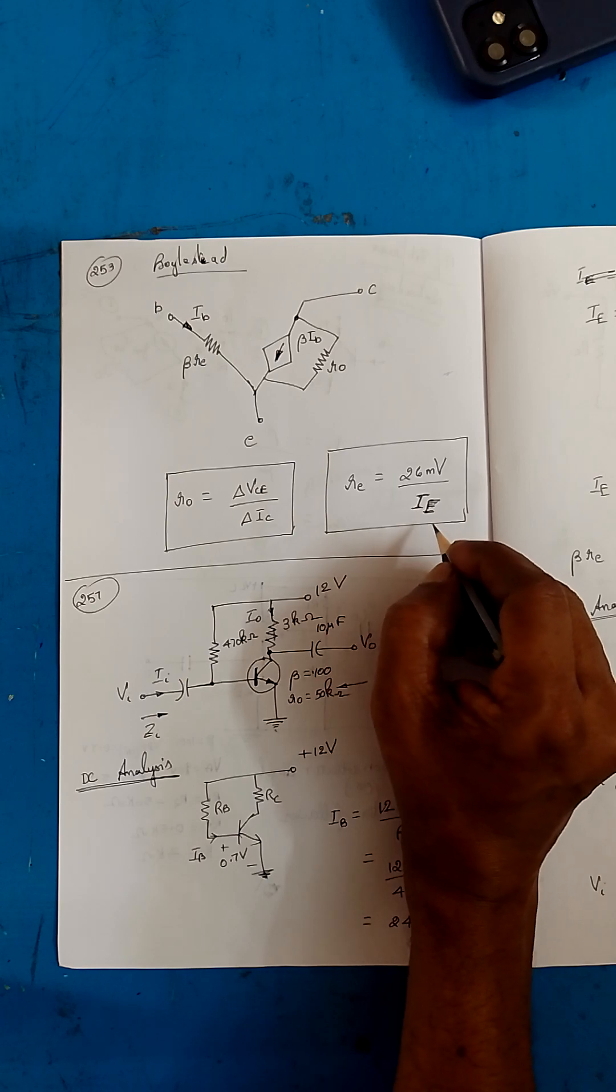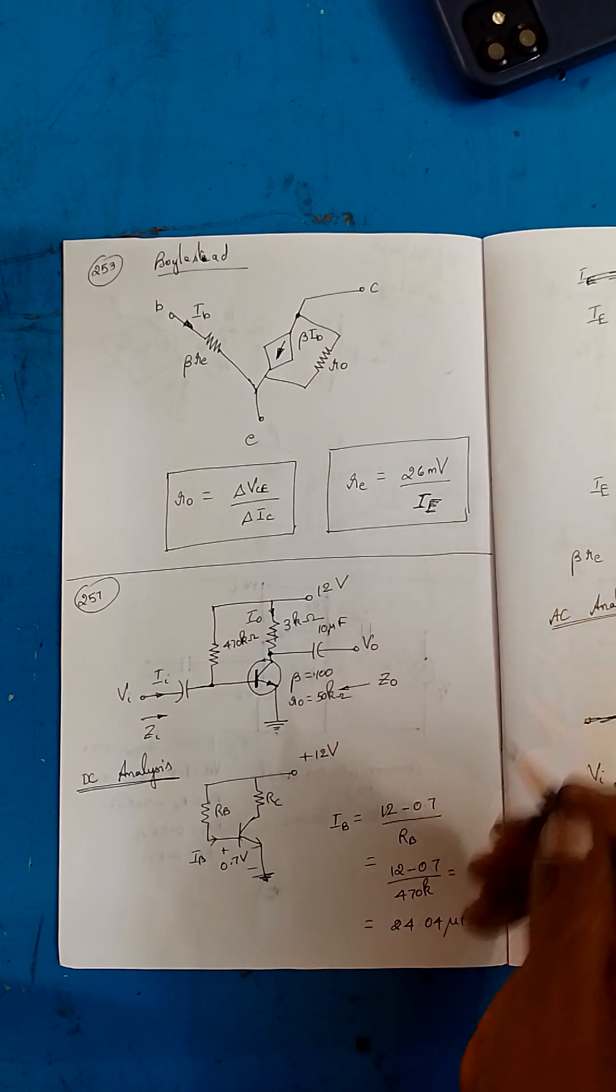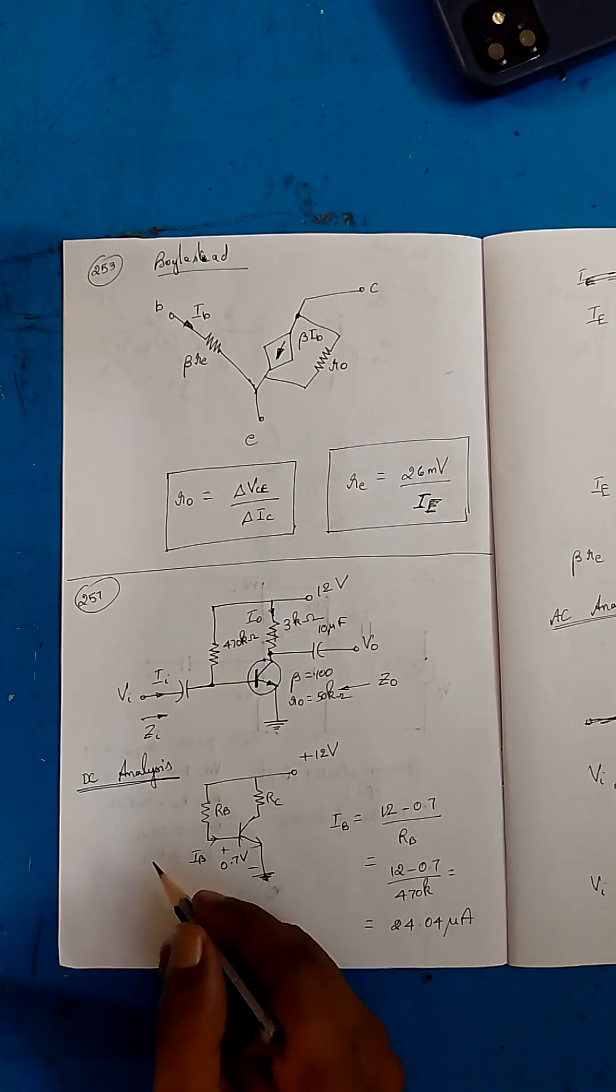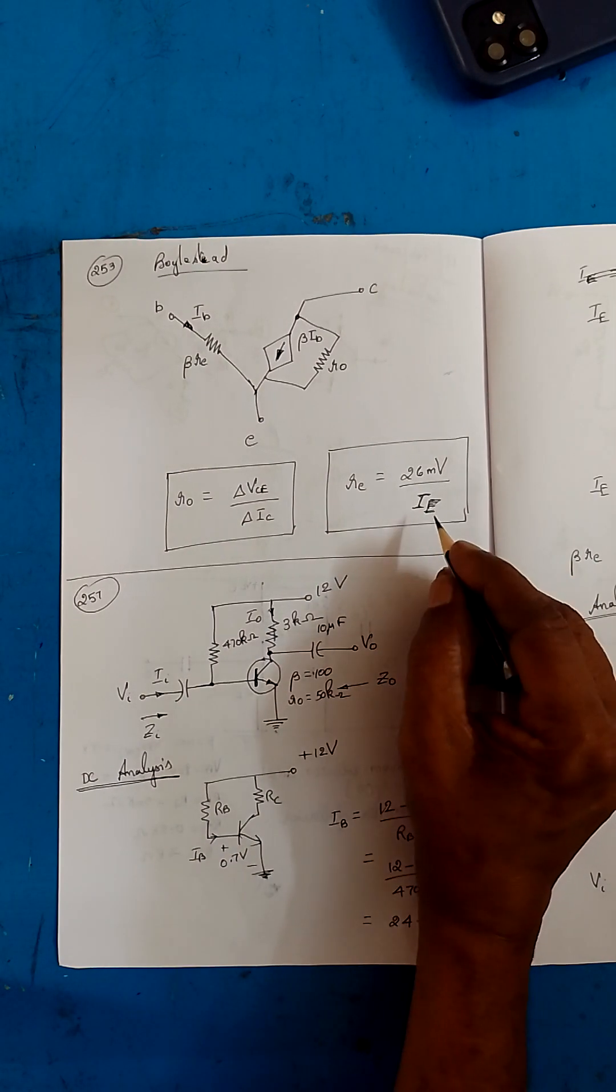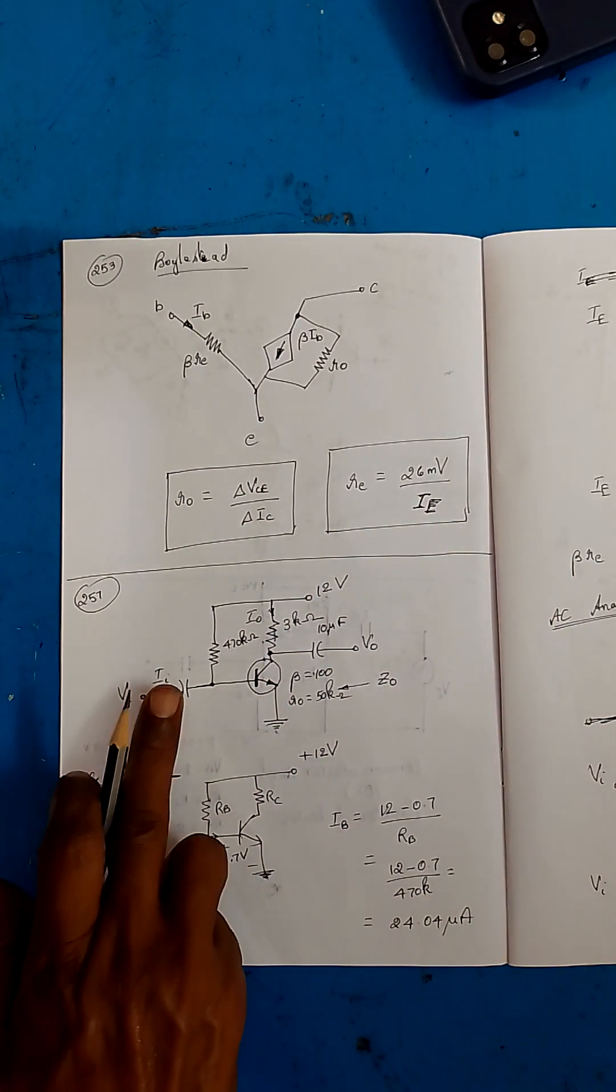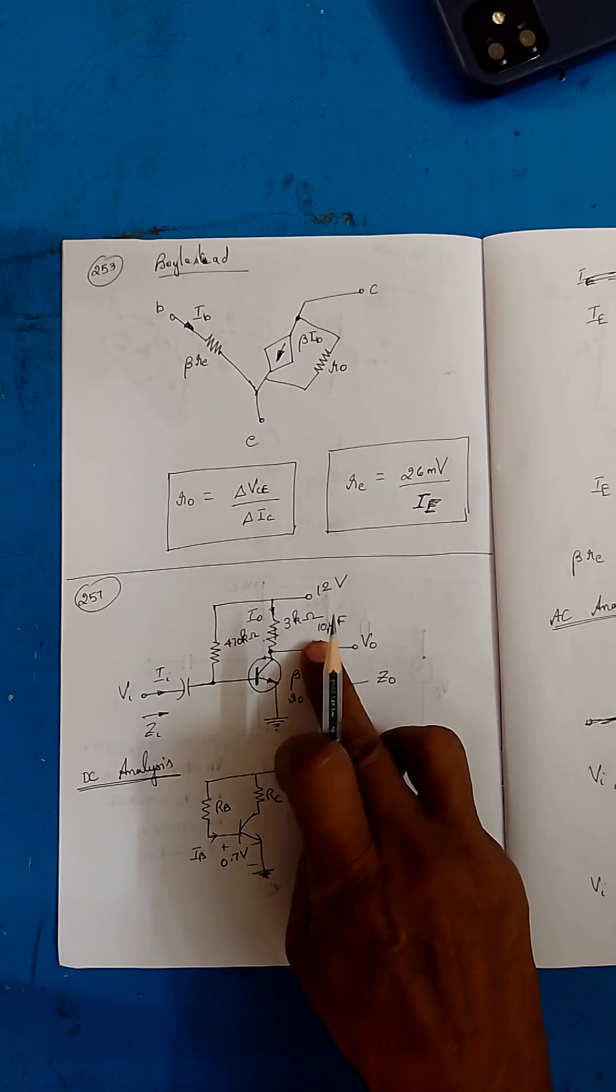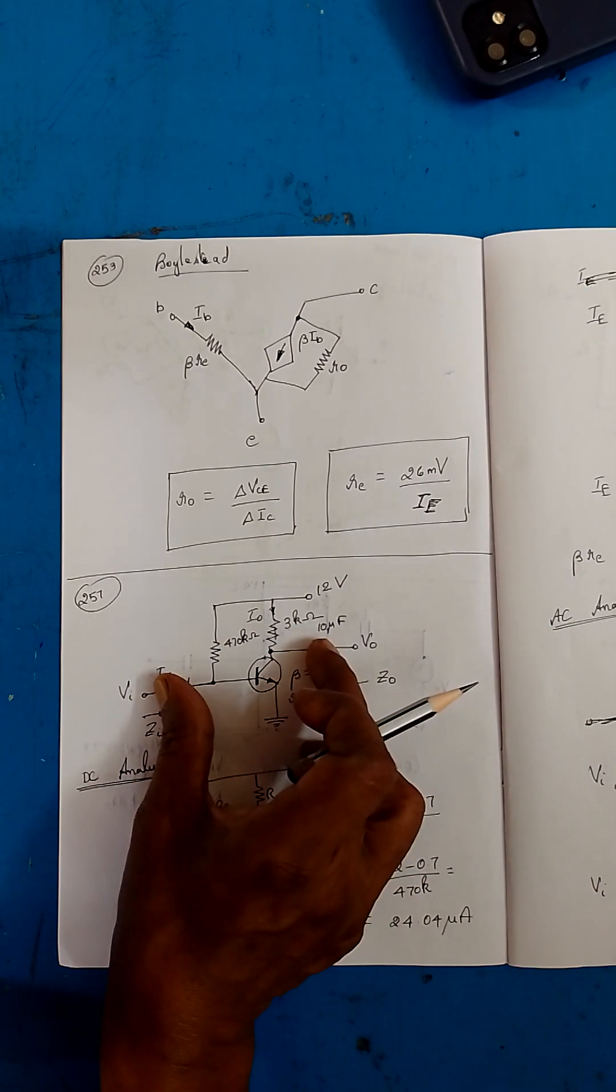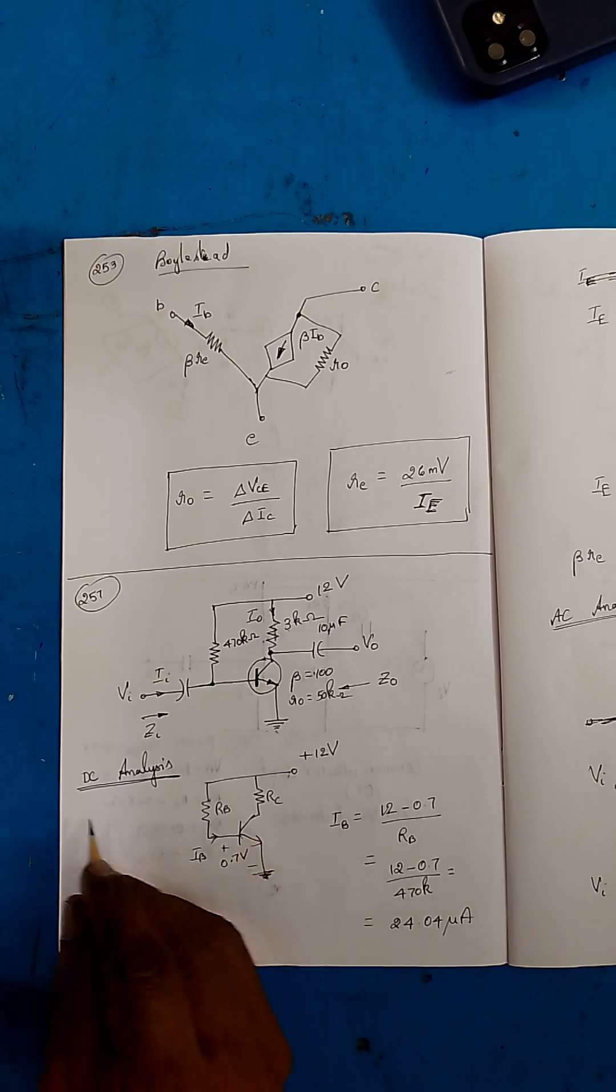So the next step will be this question. Our aim is we have to find IE. These capacitances will act as an open circuit. That's what is given here. Why are we doing DC analysis? We have to find out IE.